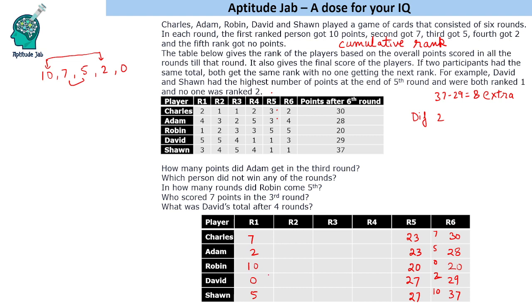Similarly, if we give 10 points to David, David would be at 10 points total, but David is in last position. Even if Adam gets 7 points, Adam is behind David — so David also cannot get 10 points in this round. We already know Robin cannot get 10 points because Robin would reach 20 and be first. So Robin also cannot get 10 points.